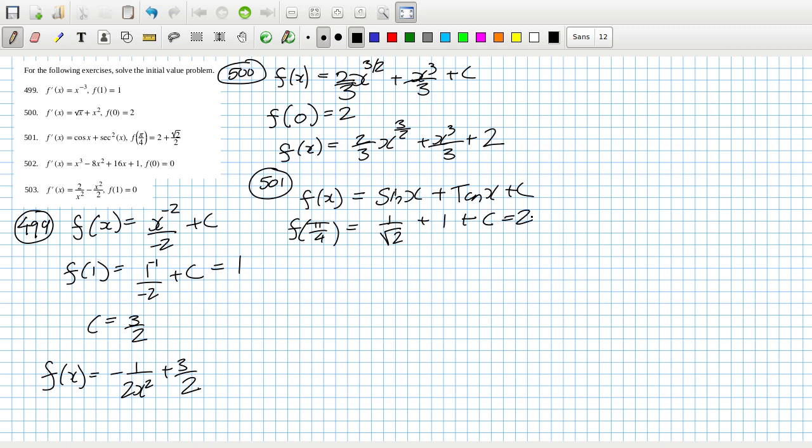That should equal 2 plus root 2 over 2, so that cancels and I'll get c is equal to 1. So f(x) equals sine x plus tan x plus 1. Okay, 502: